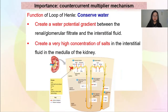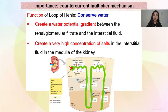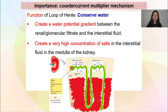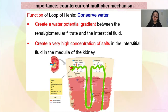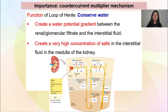The function of the loop of Henle is to conserve water. The loop of Henle will create a water potential gradient between the renal glomerular filtrate and the interstitial fluid — dia pastikan ada water potential gradient antara dua kawasan ini. It will create a very high concentration of salts in the interstitial fluid in the medulla of the kidney.